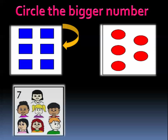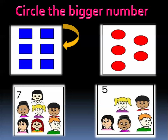Let's see another exercise. How many boys and girls do we have? We have one, two, three, four, five, six, seven. The other group has one, two, three, four, five. We have a group of seven and a group of five. Which is bigger — seven or five? Seven is bigger than five. Very, very good.